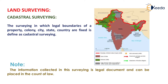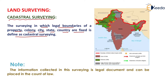The next type is cadastral surveying. The surveying in which legal boundaries of a property, colony, city, state, or country are fixed is defined as cadastral surveying. If we are able to mark the legal boundaries of a city, state, colony, or country, then that type of surveying is known as cadastral surveying. This is a very important type of surveying because it defines the border area of any state, city, or country, as shown here — the border line developed by cadastral surveying.